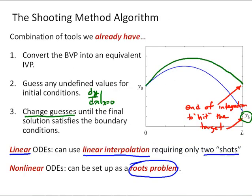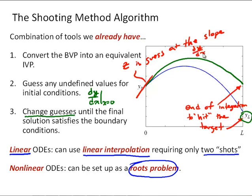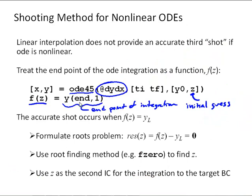Coming back to our shooting method algorithm, z is our guess at the slope — if the slope is our unknown initial condition, it's the guess at dy/dx at x equals 0. If we make that guess and put it into our function, the result of the function would be our end value, so that would be our f of z. Now that we've defined f of z as the end value of our integration given an initial guess z, we know that the accurate shot is going to occur when f of z is equal to y_L.